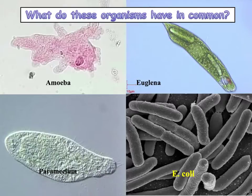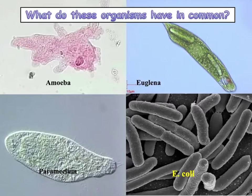The amoeba, the euglena — which is a protoctist — the paramecium, and E. coli. All of these organisms are single-celled organisms. They're all unicellular.